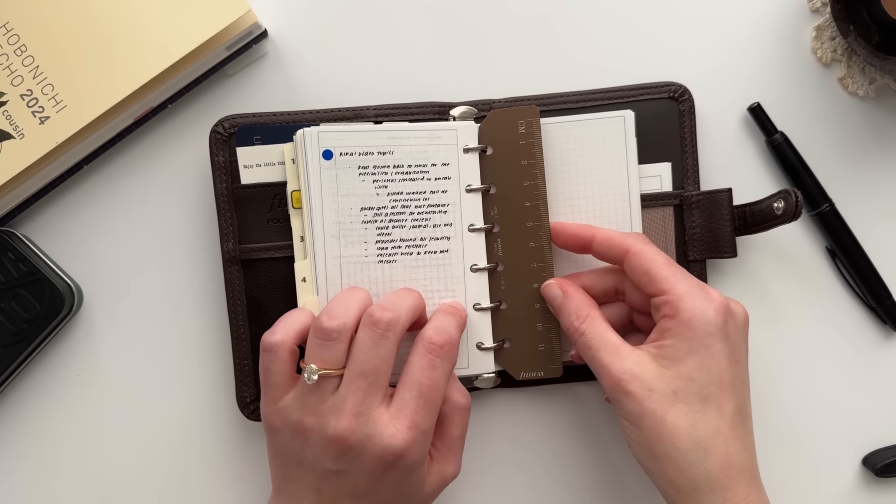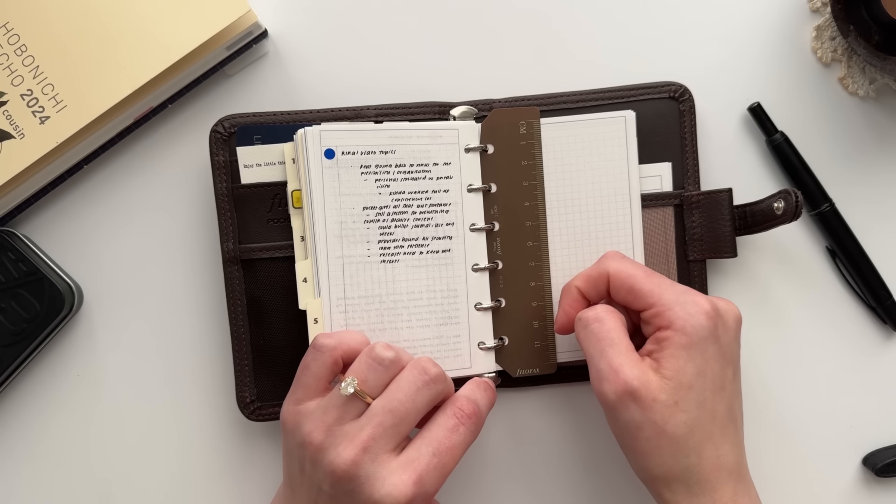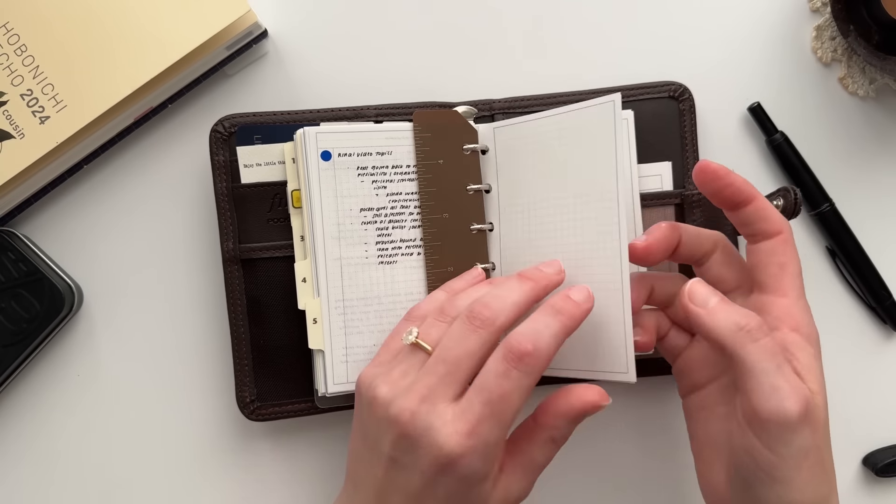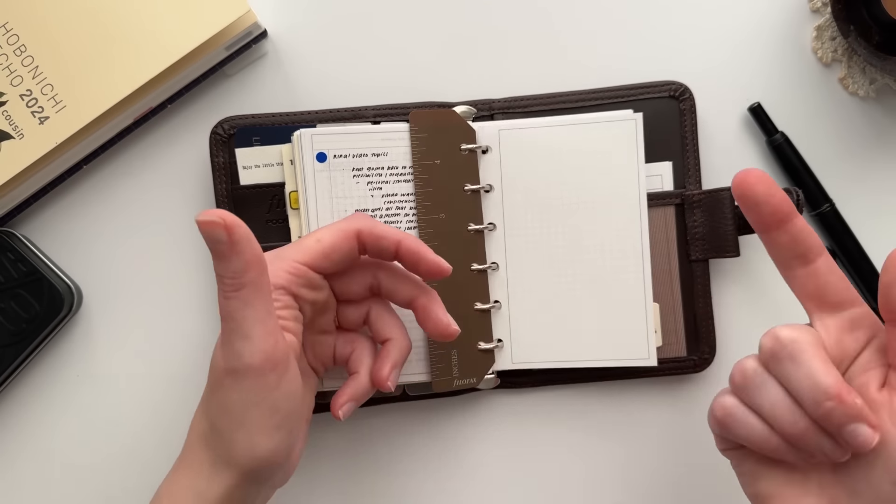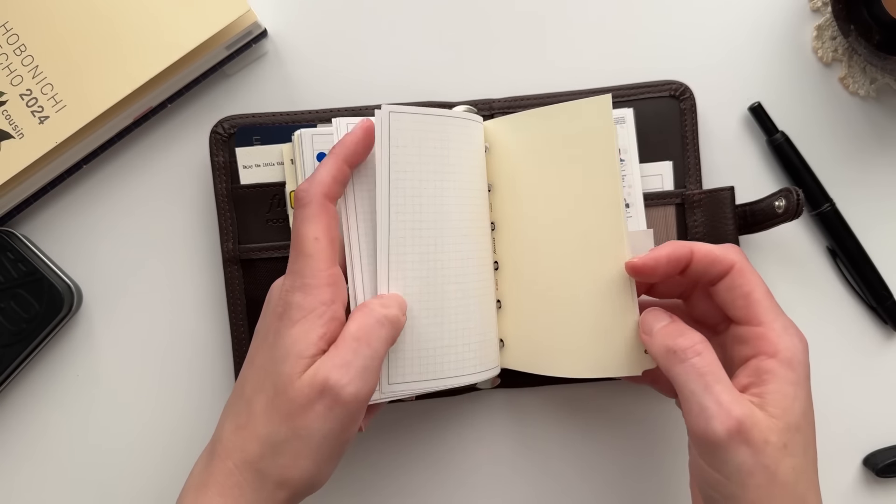This Filofax ruler came with one of my covers - I don't remember, it's 2014 so it's not an old one by any means. Then I'm just using the notes insert from my shop. I think I'm using the four millimeter - the pocket size comes with the three millimeter grid as well if you're curious.